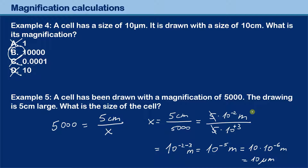The basic take-home message is: don't forget to convert units. Many students jump straight into calculations, divide the numbers, and completely forget the units. We're in science class, not math class — units are really important. Always include units directly in your calculations, not just at the end. That was the overview of magnification calculations.